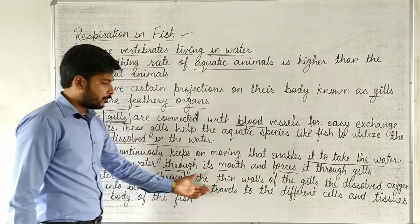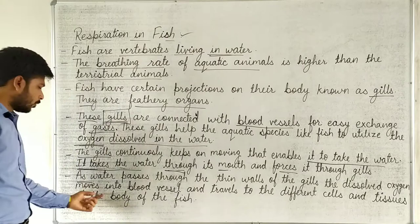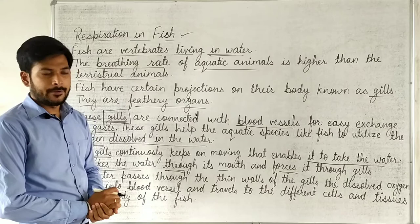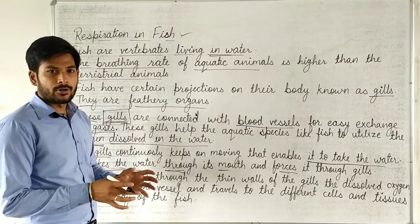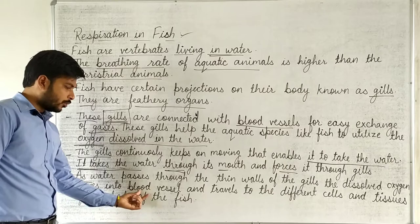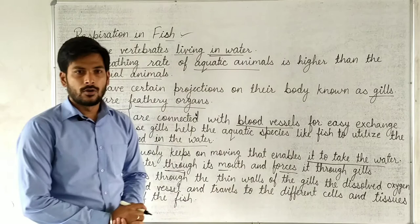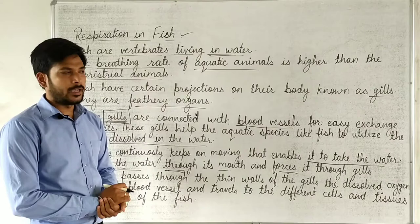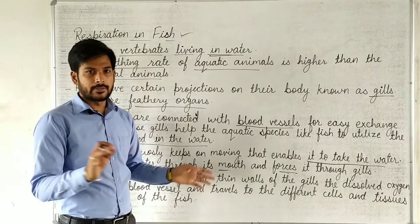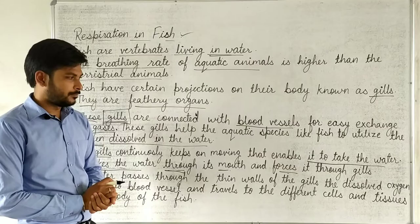As water passes through the thin walls of the gills, the dissolved oxygen moves into the blood vessels connected to the gills, and then travels to the different cells and tissues of the body of the fish through the blood vessels.